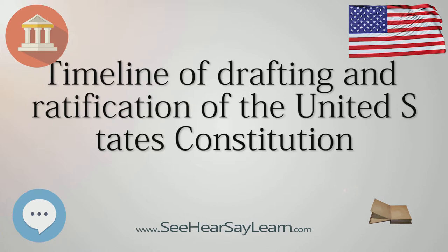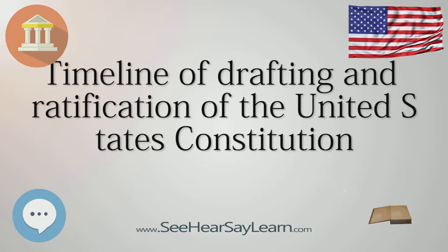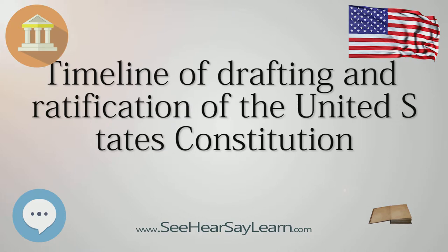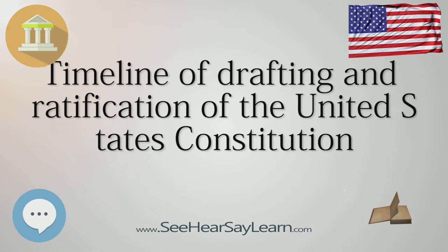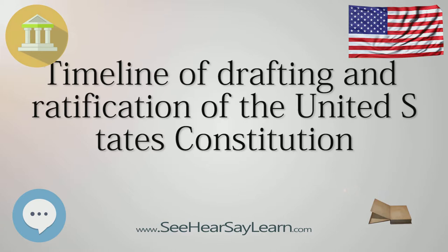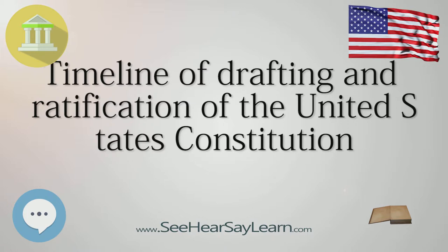February 13–22: Ratifying Convention, 1st Session, held in New Hampshire. March 1: Rhode Island Legislature calls for a popular referendum on the proposed Constitution. March 24: Voters in Rhode Island vote down the Constitution, 2708-237.